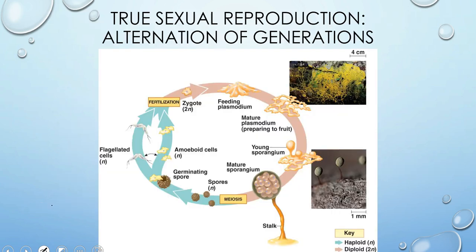We're going to start by taking a look at true sexual reproduction. The way that most protists do this is through alternation of generations. The way alternation of generations works: you start with a diploid zygote. Remember that 2n means diploid — it has two sets of chromosomes. Our human body cells are diploid. This zygote, the starting cell for our protist, is diploid.